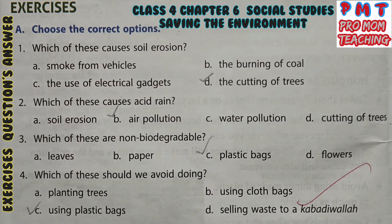Choose the correct options. First, which of these causes soil erosion? Answer D, the cutting of trees. Second, which of these causes acid rain? Answer B, air pollution. Third, which of these are non-biodegradable? Answer C, plastic bags. Fourth, which of these should we avoid doing? Answer C, using plastic bags.